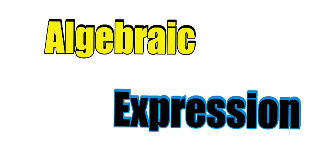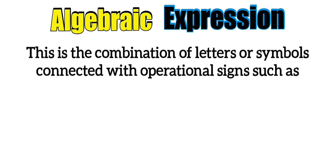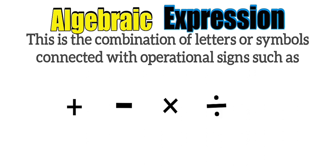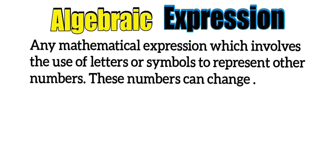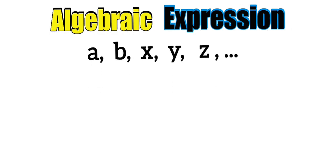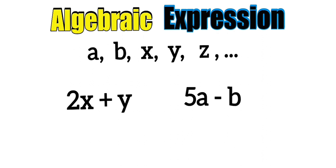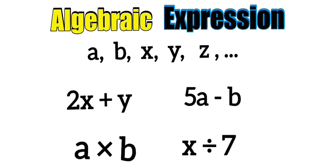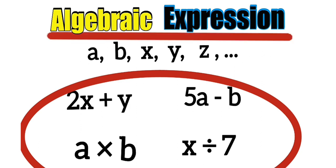Now that we know both words, let us define them together. An algebraic expression can be defined as the combination of letters or symbols connected with operational signs such as addition, subtraction, multiplication, and division. These letters or symbols represent numbers, and together with constants they are combined using operational signs to form what we call an algebraic expression.